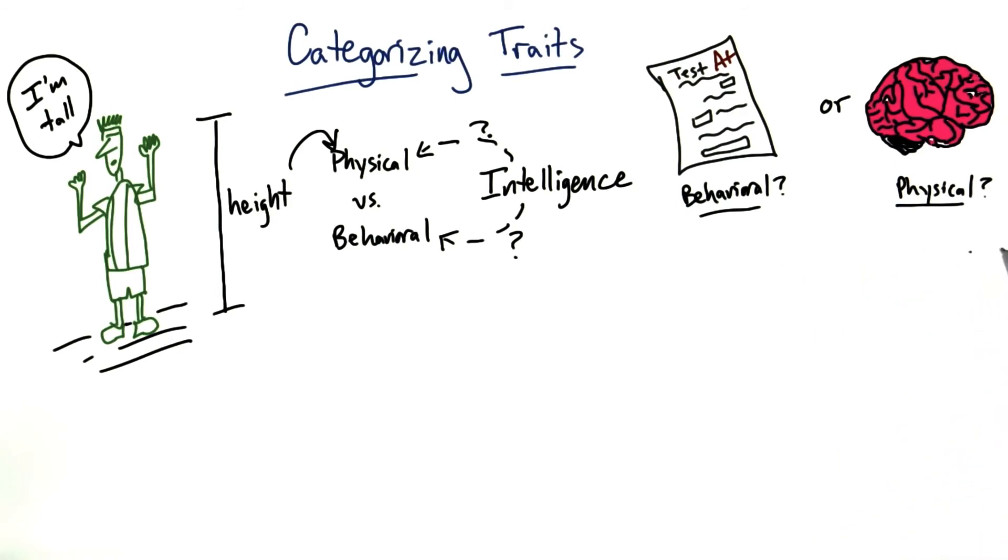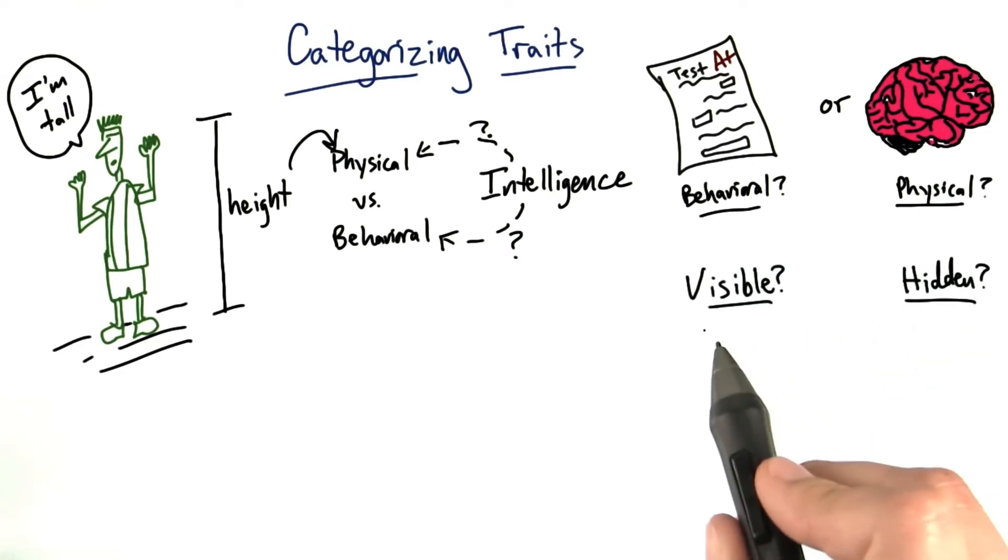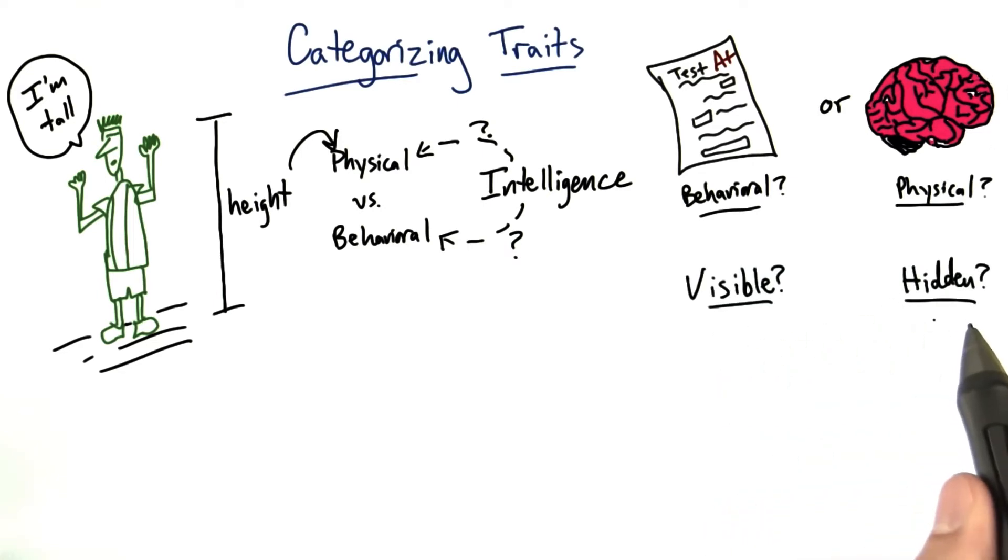Unless you define it by the number or pattern of neural connections in the brain, in which case it might seem more physical. It could also be visible or hidden, depending on whether you look at the product of intelligence versus the abstract nature of it.